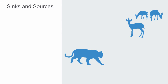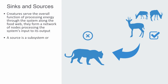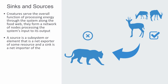All creatures have to intercept and process resources. In doing this, creatures serve the overall function of processing energy through the system along the food web. They form a network of nodes processing the system's inputs to its outputs. This process can be understood in terms of what are called sources and sinks. A source is a subsystem or element that is a net exporter of some resource, and a sink is a net importer of those resources. This flow of energy through the ecosystem is also referred to as the calorific flow.